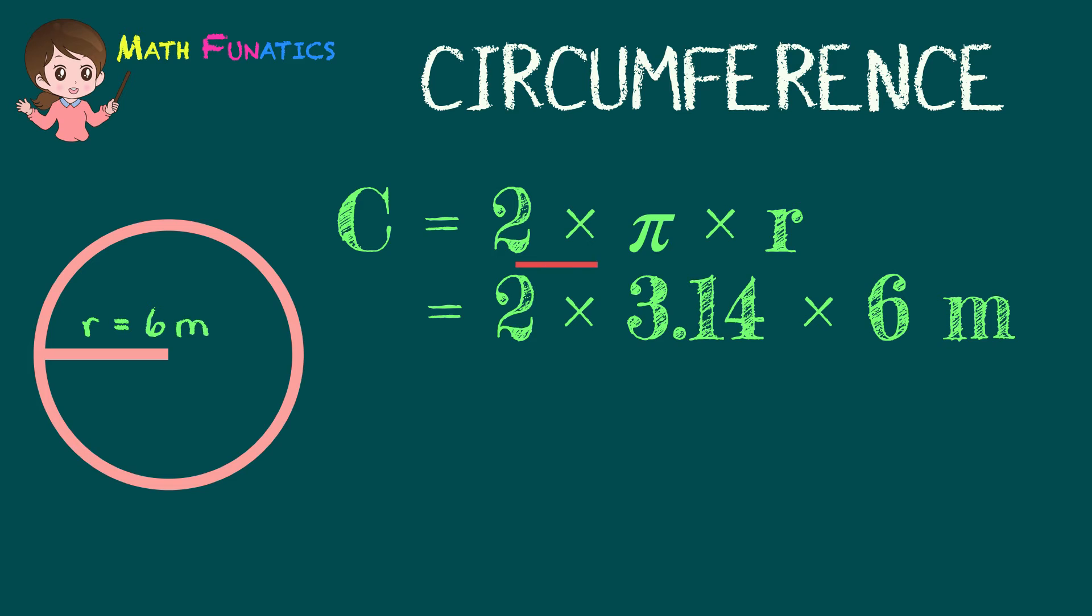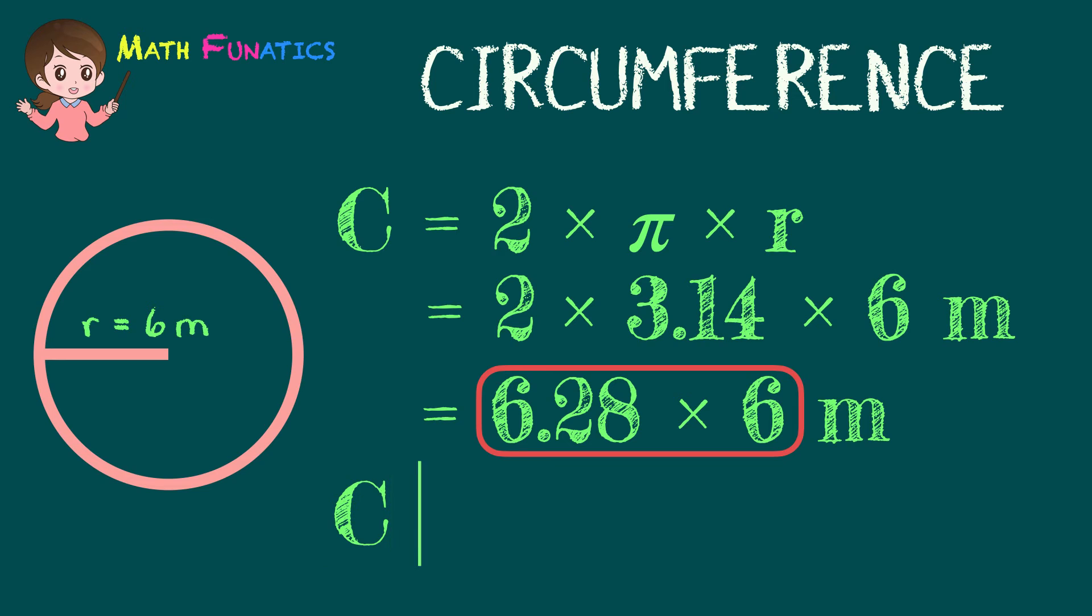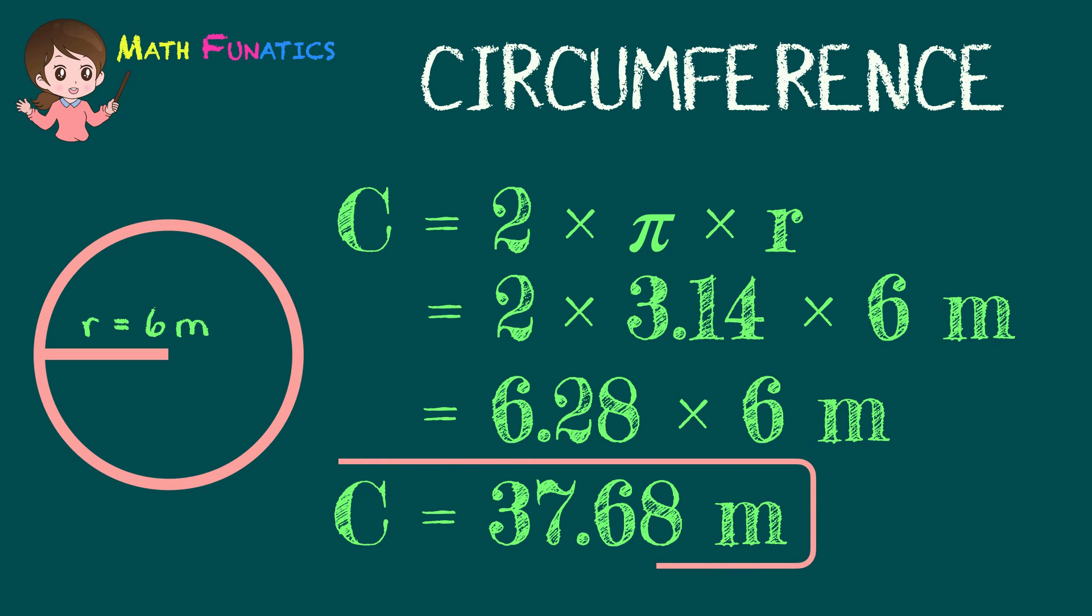First, multiply 2 and 3.14 to get 6.28. Then bring down 6 meters and multiply it to 6.28. The answer is 37.68 meters. Therefore, if the radius is 6 meters, the circumference is 37.68 meters.